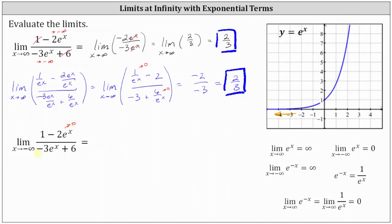Similarly, negative three e to the x also approaches zero as x approaches negative infinity, and six is not affected by x. So if the two exponential terms are approaching zero as x approaches negative infinity, without changing the form of the function, we can see the limit is going to equal one divided by six, or one sixth. I hope you found this helpful.